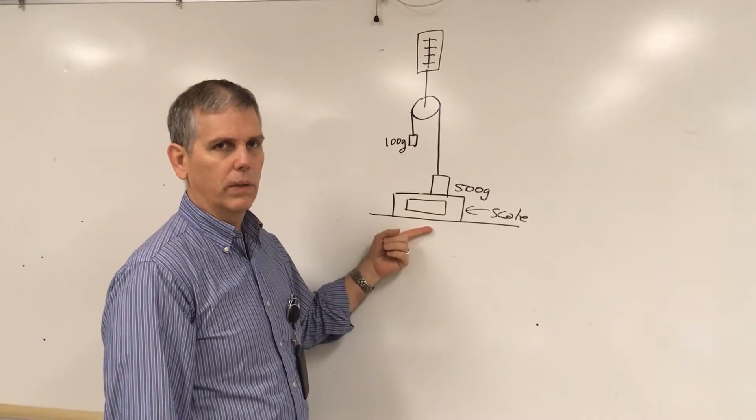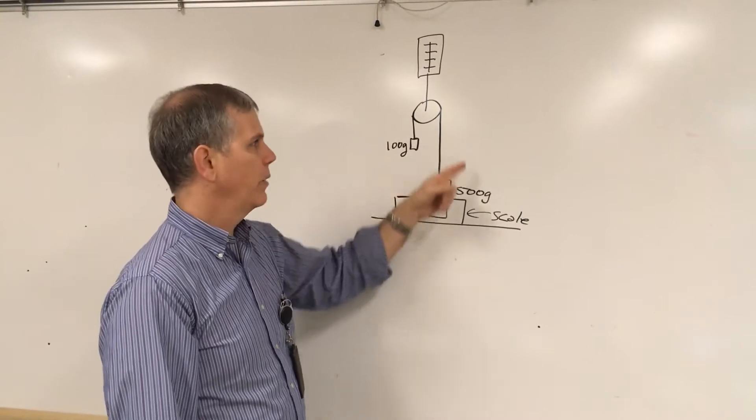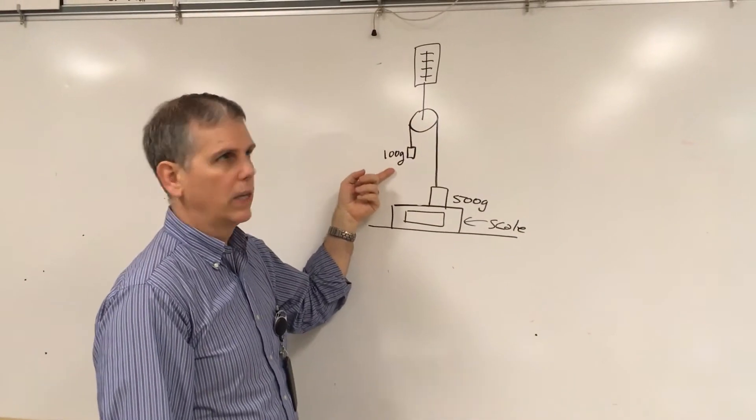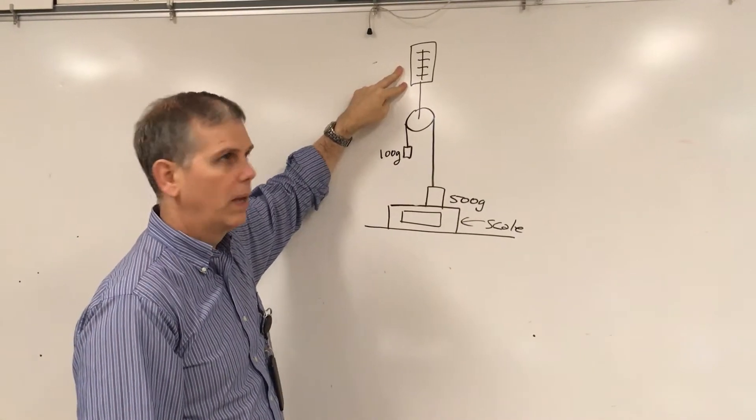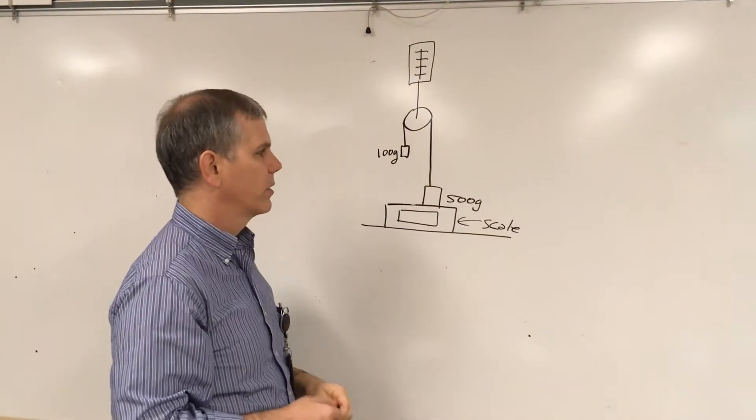We have an electronic scale, a 500 gram mass connected with a rope to a 100 gram mass, and then there's a spring scale holding up the entire thing. That would be attached at the top of course.